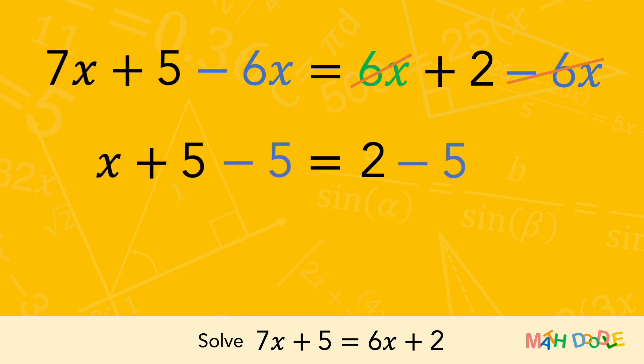After subtracting 5, the left side of the equation is simplified to x. Let's simplify the right side of the equation. 2 minus 5 is minus 3. The answer is x equals minus 3.